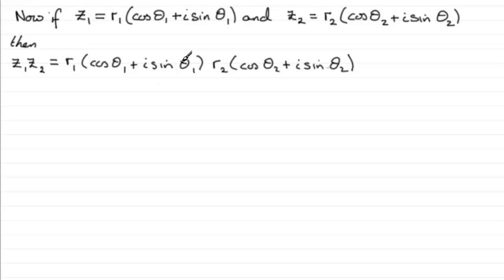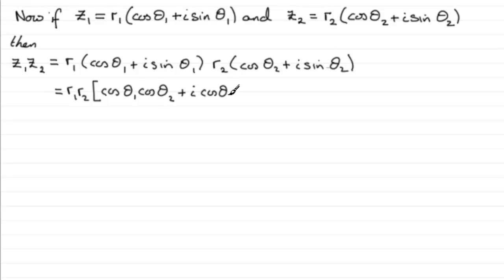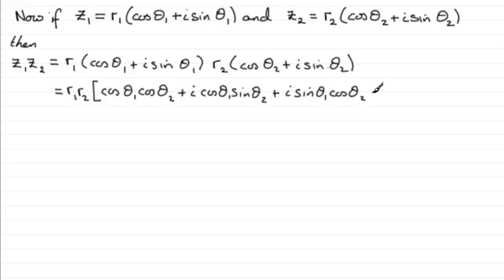Expanding, we get R1 times R2 out front. Multiplying the brackets gives: cos theta 1 cos theta 2, plus i cos theta 1 sine theta 2, plus i sine theta 1 cos theta 2, and finally plus i squared sine theta 1 sine theta 2. Since i squared equals negative one, that last term becomes minus sine theta 1 sine theta 2.